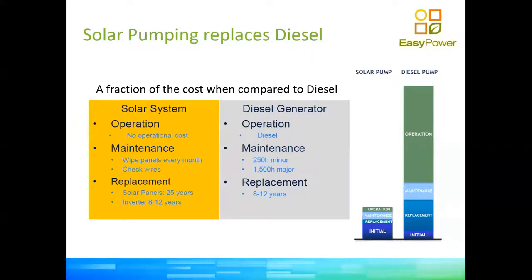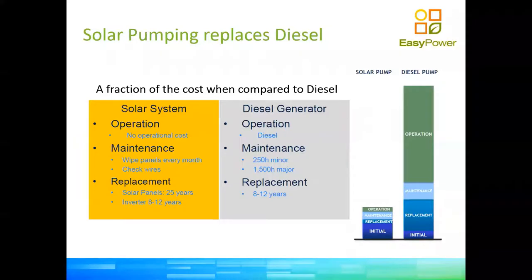Diesel generators have high running costs — diesel fuel fluctuates continuously, plus maintenance costs at 250-hour and 1,500-hour services also fluctuate. With a solar VSD system, the majority of maintenance you need is to clean your panels and make sure your cables are clean and protected from rats. With diesel, your costs will always be a lot higher than any alternative.